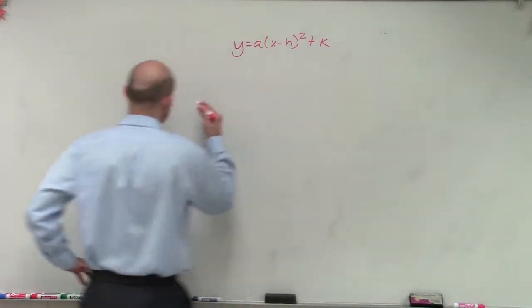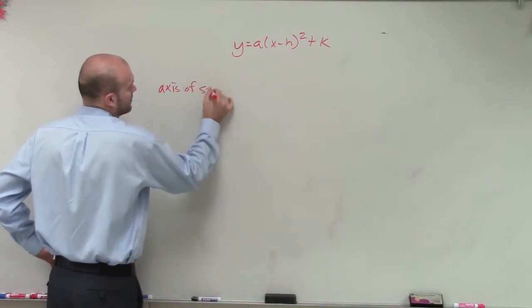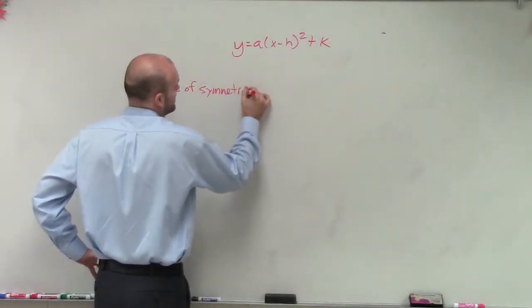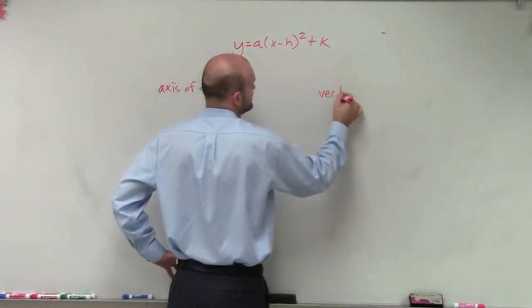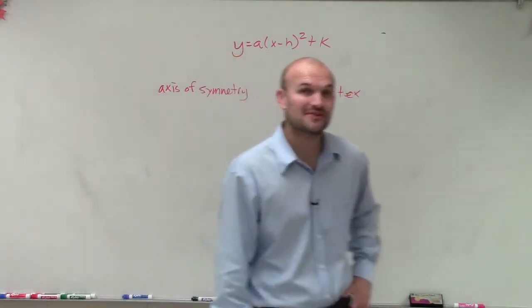I want to find how to find the axis of symmetry and the vertex. I call this vertex form because it's very simple to be able to find the axis of symmetry and the vertex.